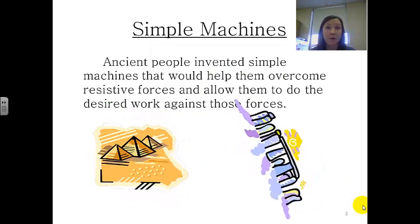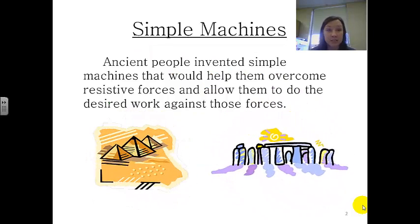So what did they come up with? They came up with simple machines. Ancient people invented simple machines that would help them overcome resistive forces like friction and allow them to do the desired work against these forces. Some of the forces we're talking about are friction, gravity, electricity, etc.